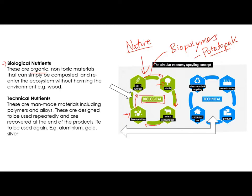Biological nutrients are organic, non-toxic materials that can simply be composted and re-enter the ecosystem without harming the environment — so wood, biopolymers, as long as they are coming from those natural resources. Any of those types of materials being used can just be returned to nature. They don't give out nasty chemicals, they don't go to landfill — they are natural. If we can use as many biological nutrients as we can, that's going to have a big impact on reducing environmental damage.